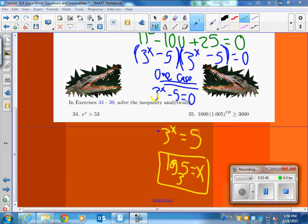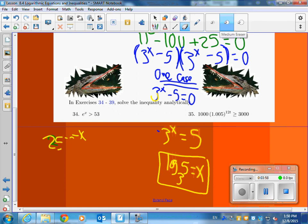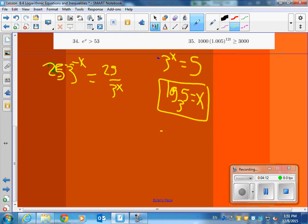A great question is how does 25, how does 25 e to the negative x, and that's 3 to the, how many times have I done that in the video? Okay, 3 to the negative x is going to be the same as 25 over 3 to the x. So let me just show you that briefly.